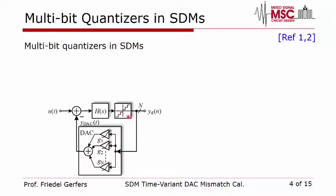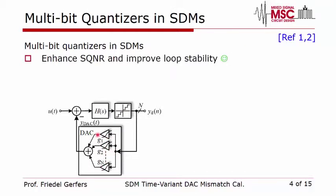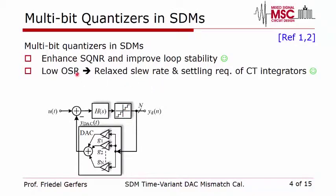However, we need not only a multi-bit quantizer but also a multi-bit DAC consisting of unit elements, as shown in this high-level architecture. The benefits are: quantization noise is improved, and since we have a linear transfer function of the quantizer the loop stability also improves. Furthermore, the significantly improved quantization noise performance allows us to reduce the oversampling ratio, which relaxes integrator requirements in terms of slew rate and settling behavior, reducing power consumption further.